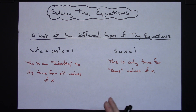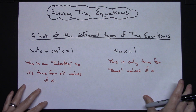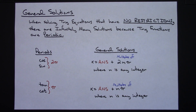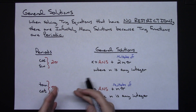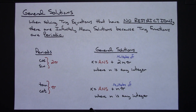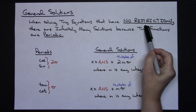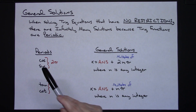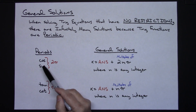Some equations are going to have just specific answers, and others will have more general solutions. Trig equations are periodic in nature — that sine wave goes on forever in both directions. So when you're solving a trig equation and they place no restrictions on it, you're going to write a general solution based on the period of the trigonometric function.